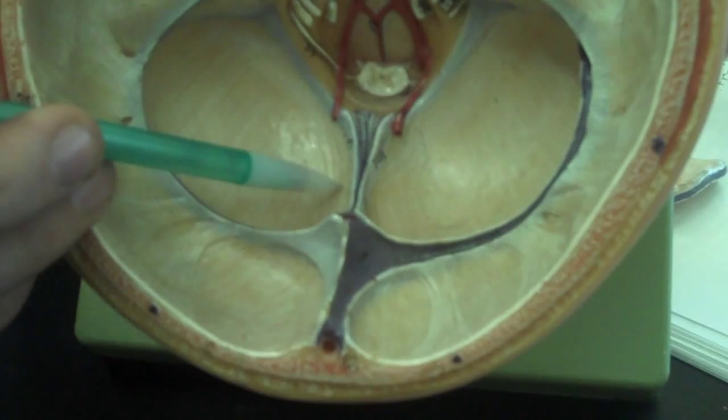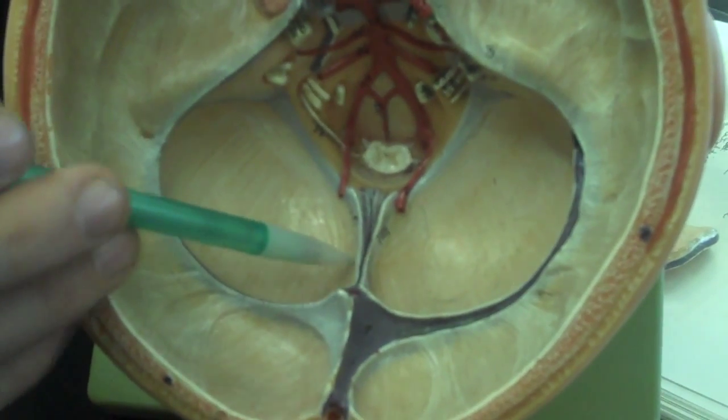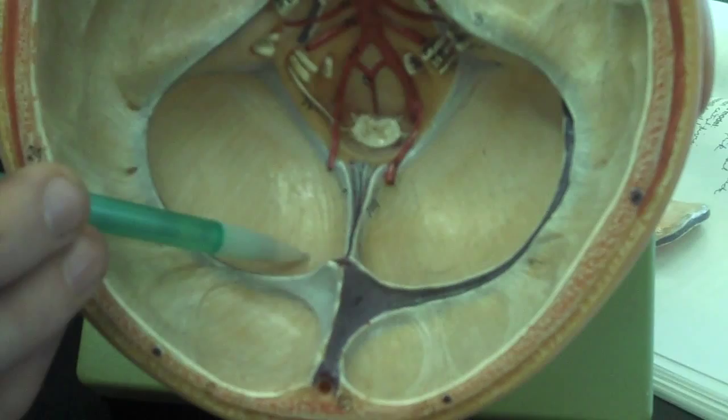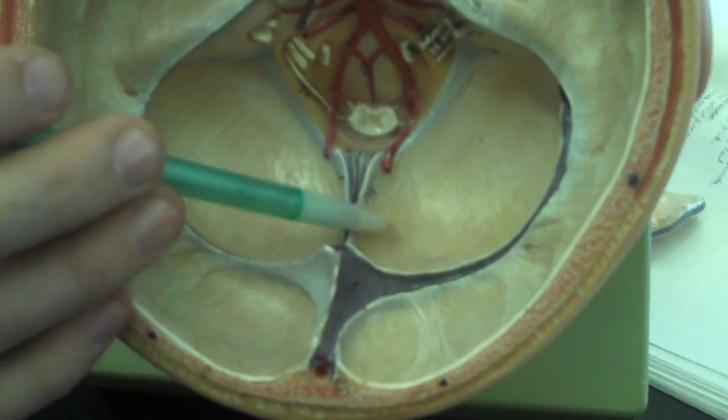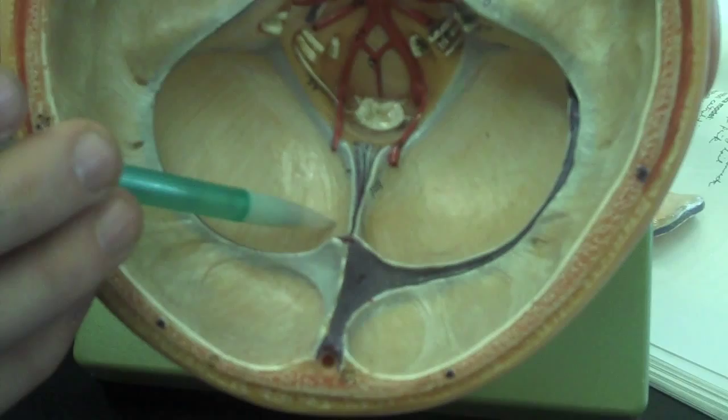And the Falx cerebelli does the same thing the cerebri does for the cerebrum. It separates the two portions of the cerebellum.